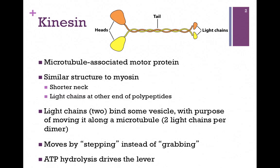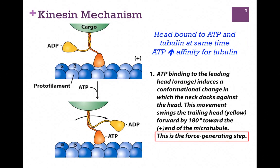Another similarity is that we're going to move those heads by ATP hydrolysis. With myosin, we bundled a bunch of those dimers together to form the thick filament - all the tails associated together with multiple heads contacting actin. In this case, the fundamental unit is just the dimer, because our goal is different. We want to move that cargo from one place to another, and we just need one set of heads to do that.